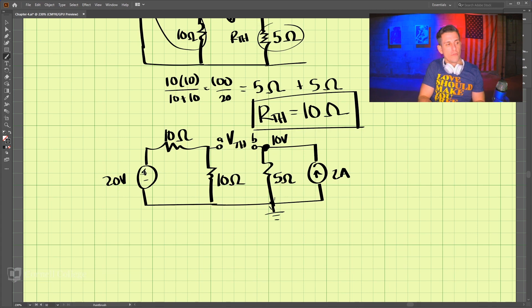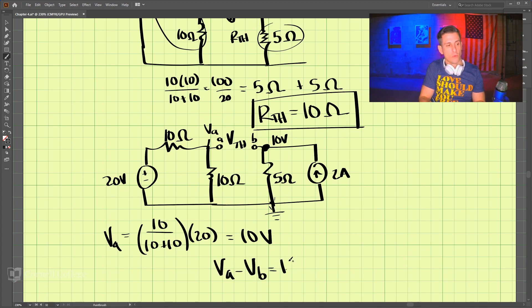And 20 volts over here, we have a voltage divider. So we can do 10 over 10 plus 10 times 20 will be the voltage here at A. The voltage at A comes out to 10 volts. So the voltage across A to B is 0 volts. Voltage at A minus the voltage at B equals 10 minus 10, which is 0 volts.